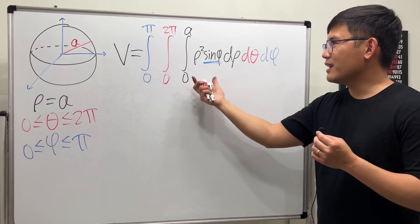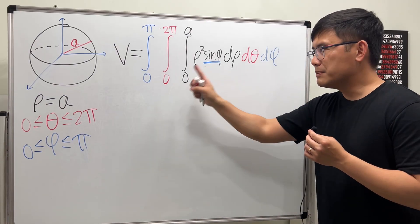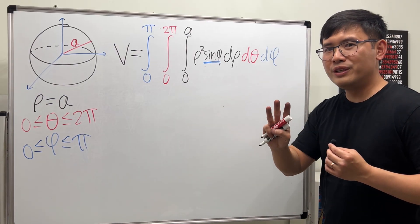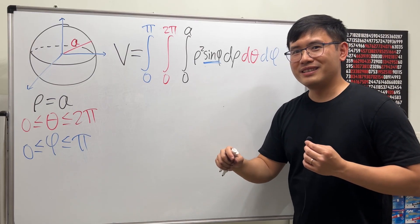In fact, we can break down this triple integral, this particular one, into three regular integrals, and then we multiply them. Have a look.